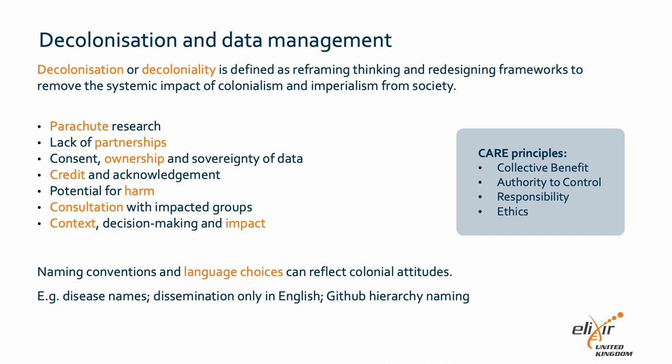Decolonisation requires reframing how society operates to remove systemic impacts of colonialism. In the context of science, research and data management, this means redesigning the processes and frameworks we use to ensure the impacts of imperialism are mitigated and ideally removed. Some of the relevant ways colonialism still impacts scientific research include parachute science, when researchers from wealthier countries take over projects in other regions rather than enabling full involvement of the researchers and other relevant groups living in those areas via a partnership model.